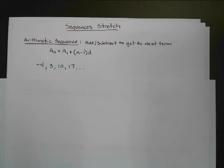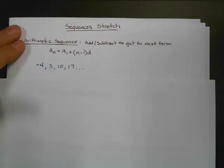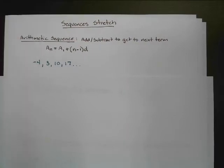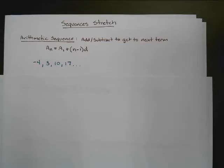All right, my math counts, people, my counters of math. Here we go. We've got sequences. So this is going to be a quick one. We want to look at a couple different types of sequences, and sequences are just numbers that are related to each other in a row.